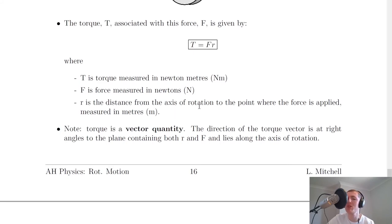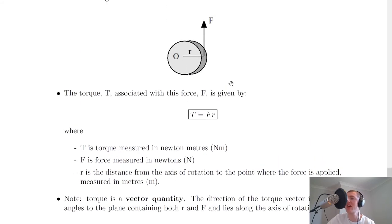The axis of rotation just means the point at which the object will move around. In this case, for the disc, it's going to be in the centre of the disc.